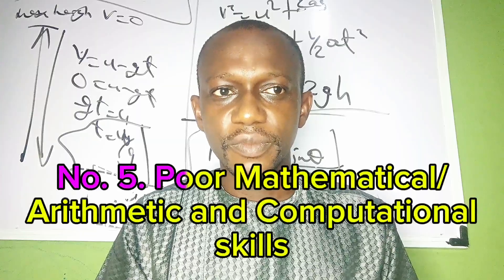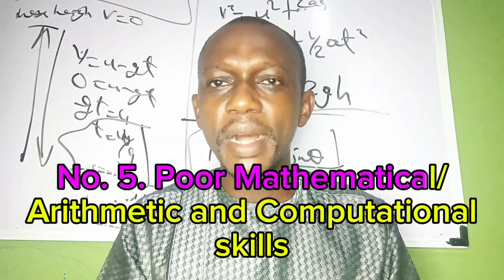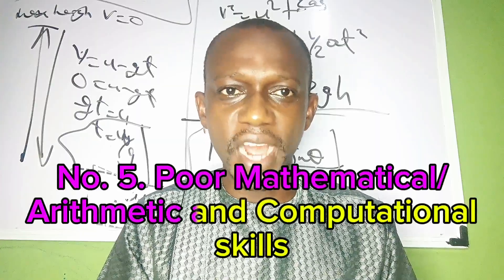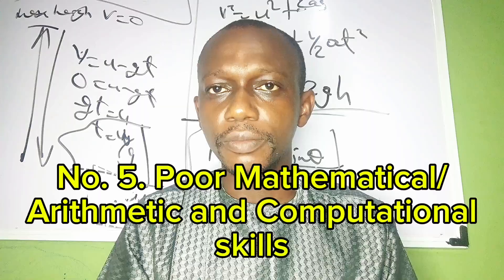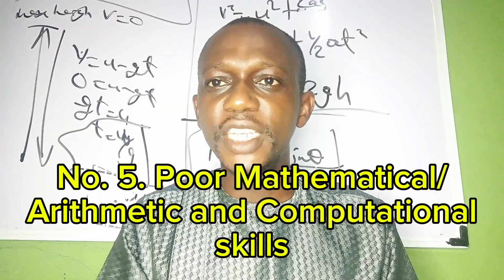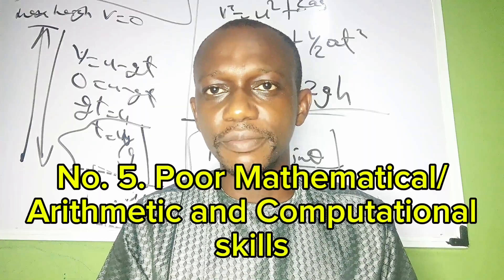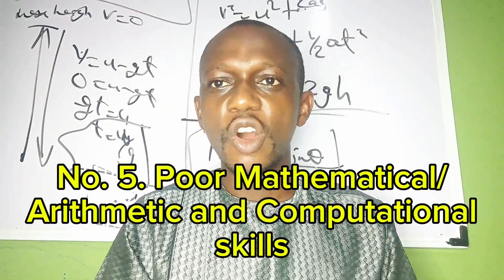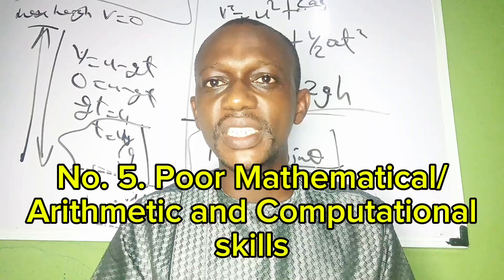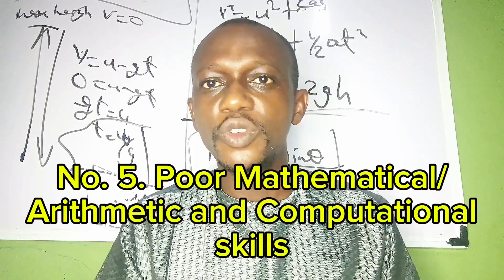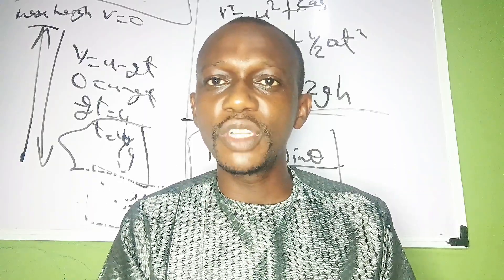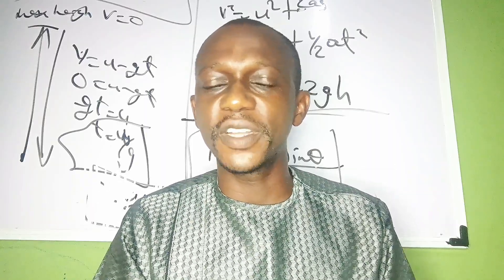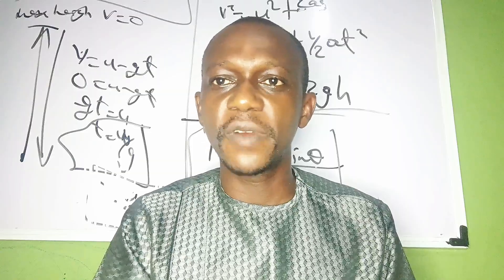Number 5: Poor mathematical, arithmetic, and computational skills. This deals with mathematics. I will also release a video on mathematics — the little errors that affect math, because it is mathematical but it reflects directly in physics.